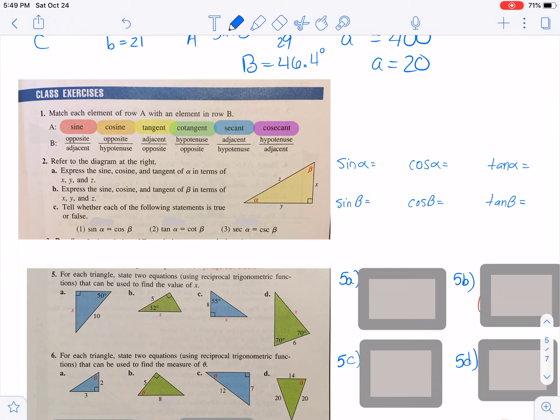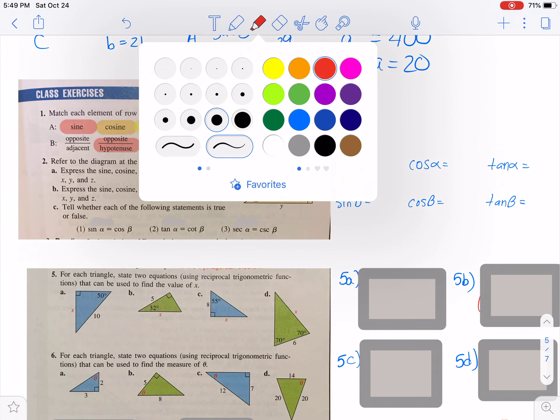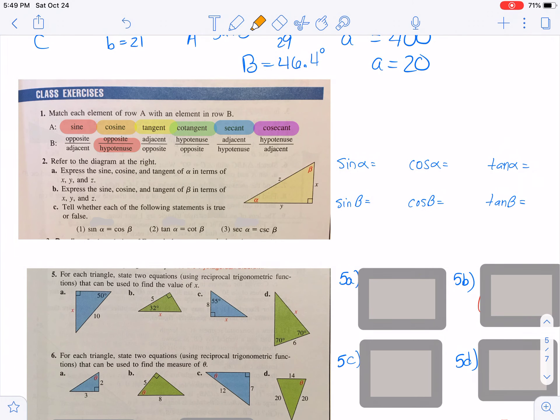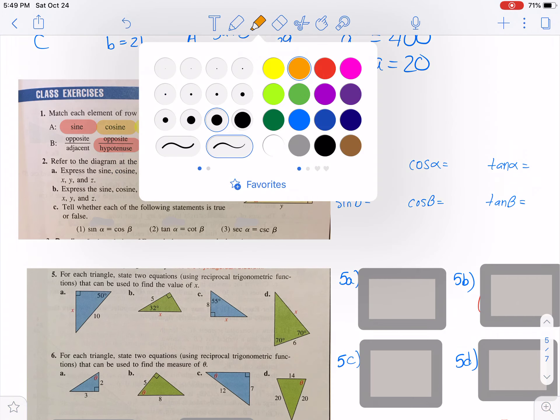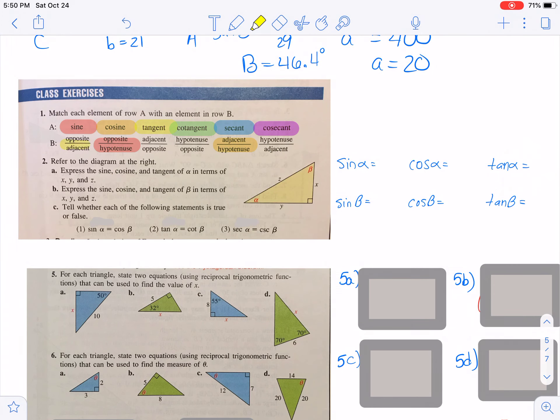So here in the first part, they ask you to match basically the ratios. And so for sine, we need to find the one that says opposite over hypotenuse. For cosine, we need to find the one that says adjacent over hypotenuse. For tangent, we need the opposite over adjacent. And then cotangent, they listed next. Cotangent is the reciprocal of tangent. And so then we would want that to be the adjacent over opposite. Secant is the reciprocal of cosine. And so we would want that one to be the hypotenuse over adjacent. And then cosecant is the reciprocal of sine, so hypotenuse over opposite.